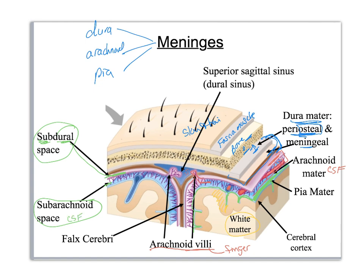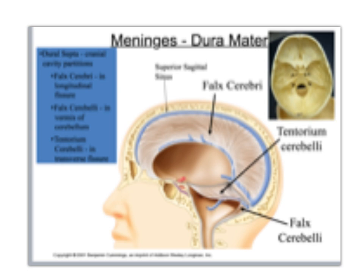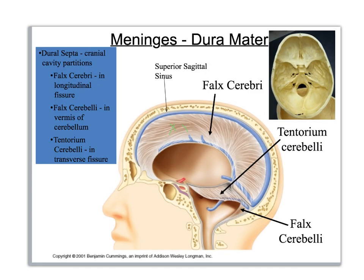The meningeal layer dips down and where it sandwiches together it creates a special membrane we call the falx cerebri. The dura mater in three areas becomes super thick and we change the name because it has a job dividing up the brain into sections. The falx cerebri dips into the longitudinal sinus. Now you have the tentorium cerebelli, which is located right here.